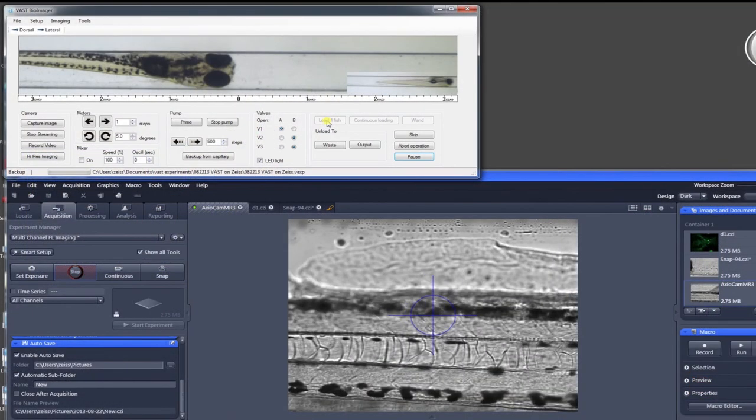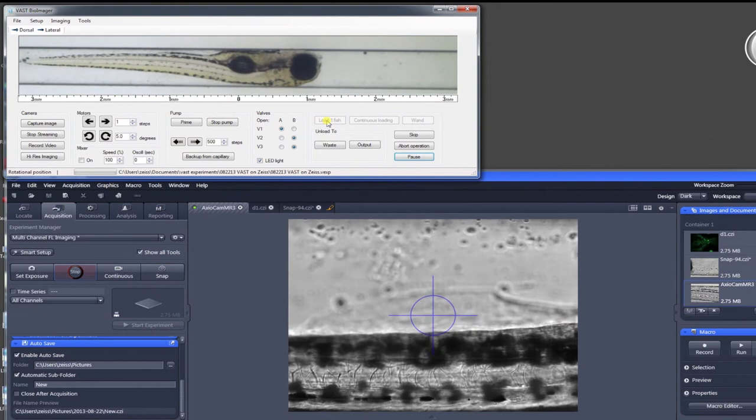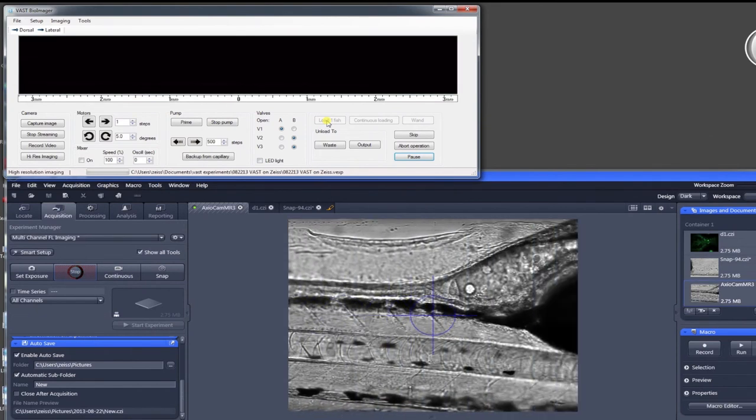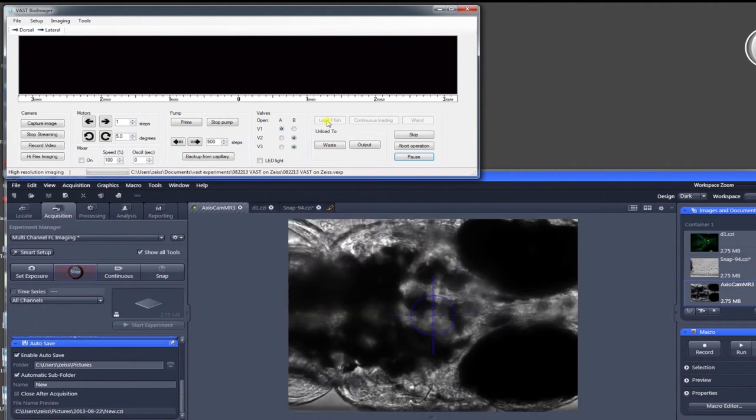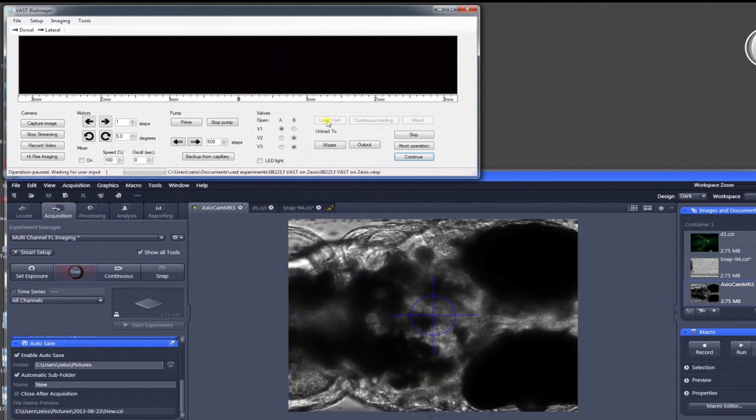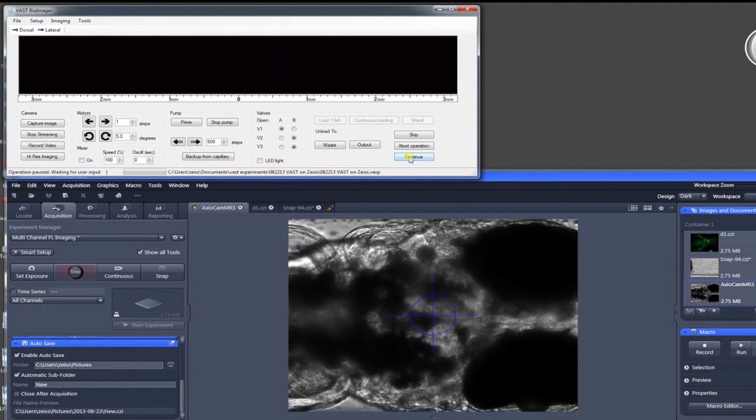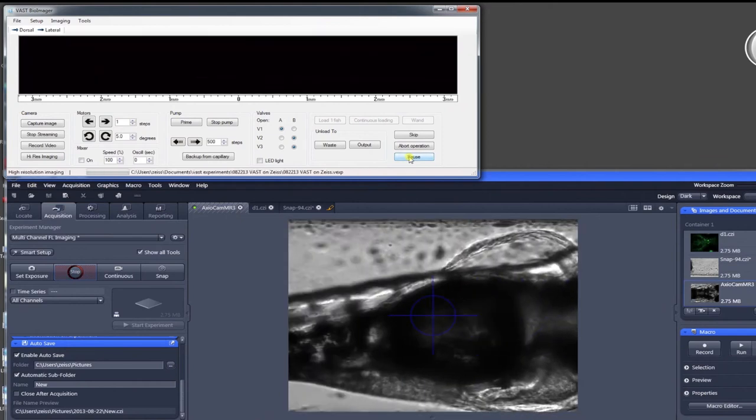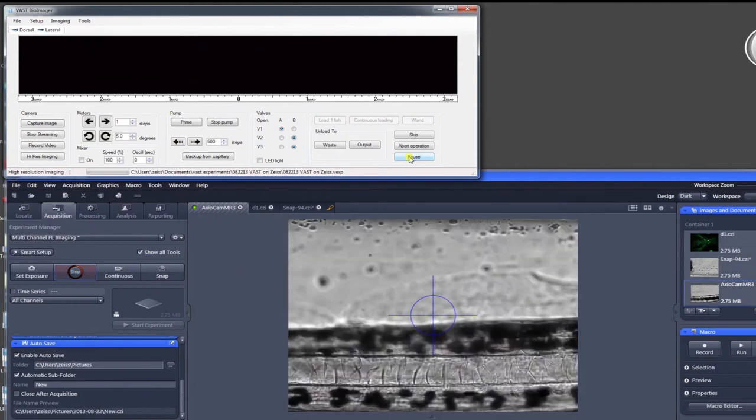When using VAST with a microscope, once the larva is positioned using the onboard camera, the VAST light source is turned off and high resolution images can be captured with the microscope's camera. In this example, images are collected for both the dorsal view of the brain and a lateral view of the tail.